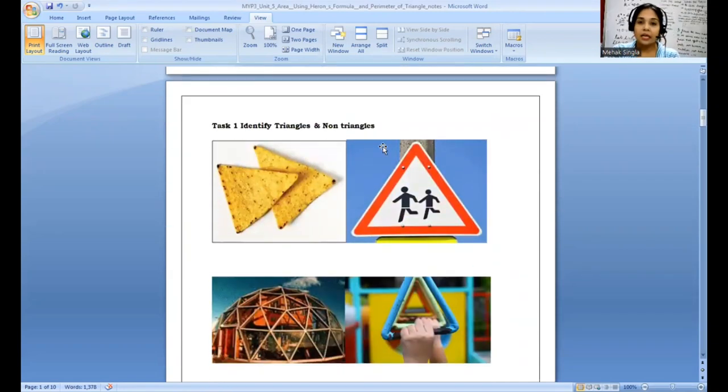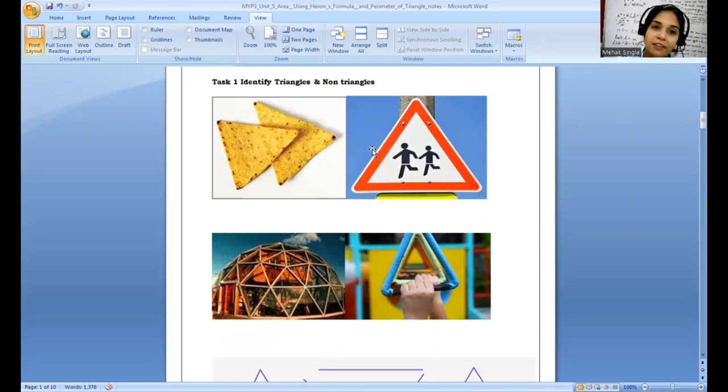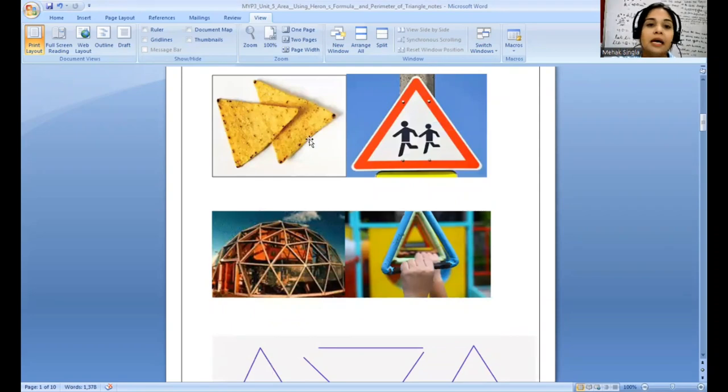We have to identify triangles and non-triangles from some real life examples. You all know what this is - nachos. Yeah, this is a triangle good. What about the second figure? The symbol board, yeah this is also a triangle, great. Yep, this is also a triangle, correct. What about this shape, this particular shape which is inside this? Very good, this is also a triangle, another triangle great. And how about this next one?